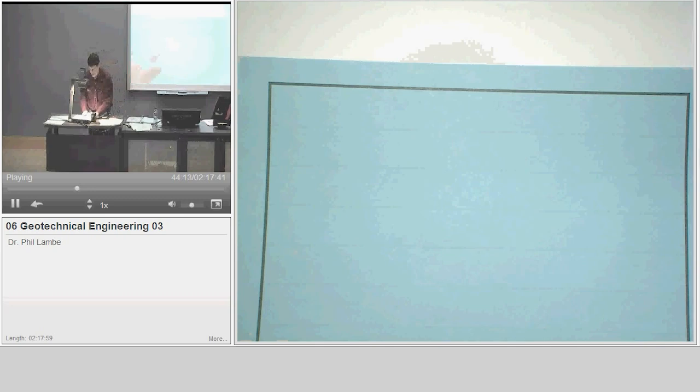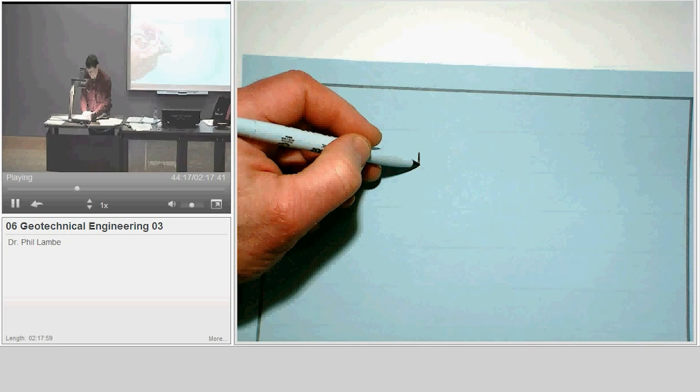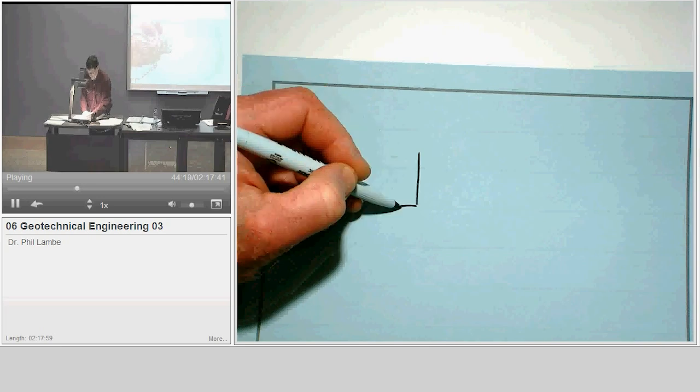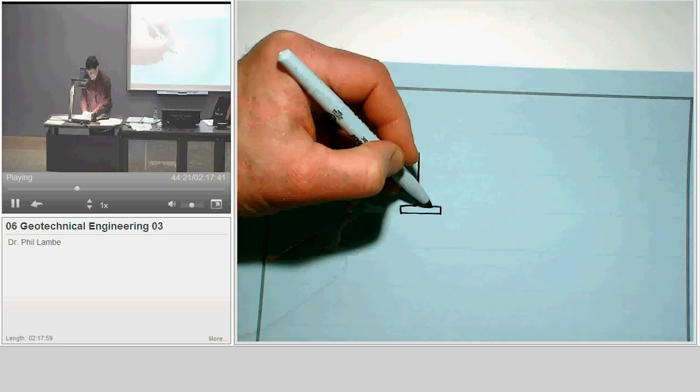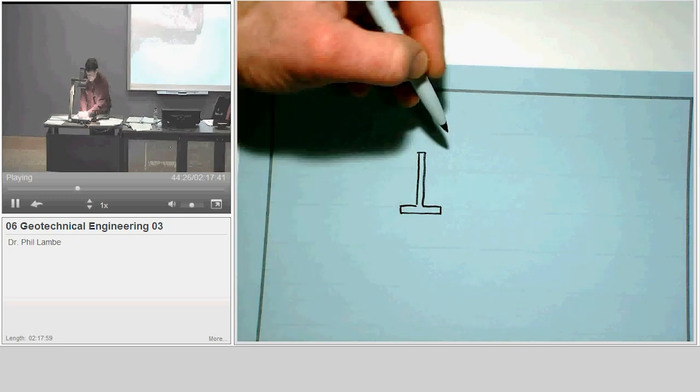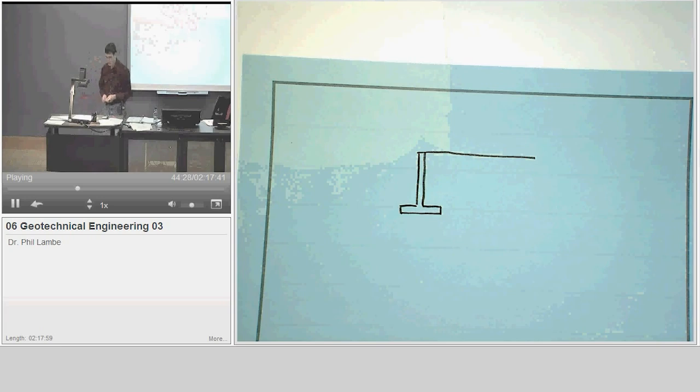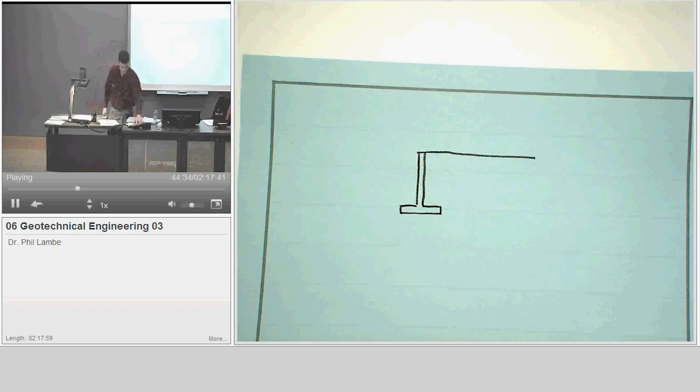The retaining wall that we're going to look at is a concrete cantilever wall with soil behind it. This is the classical retaining wall. It's not the most common retaining wall that geotechnical engineers design, but it's the one that you'll see in all of the introductory textbooks.